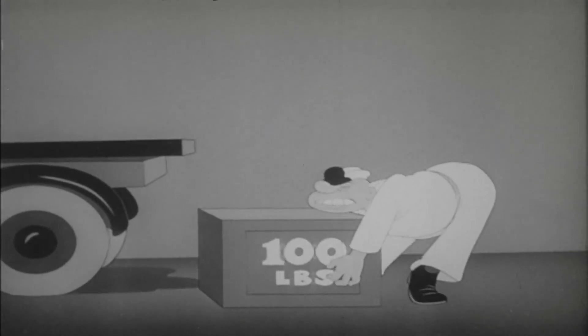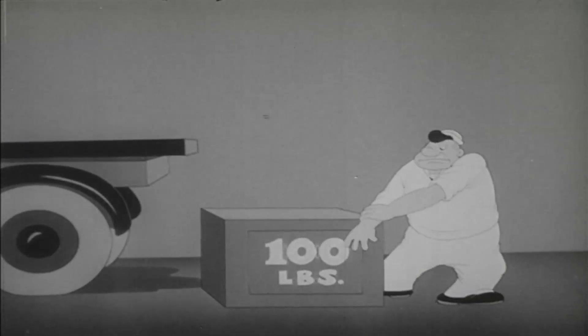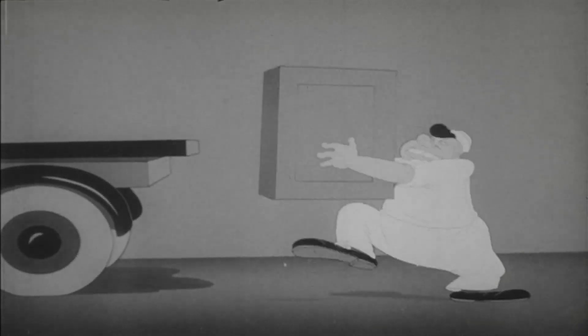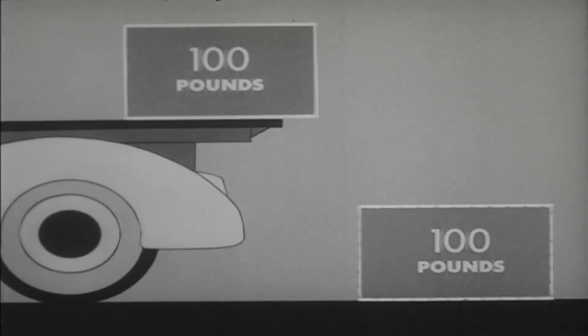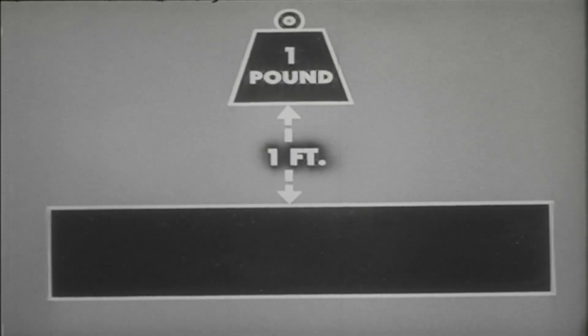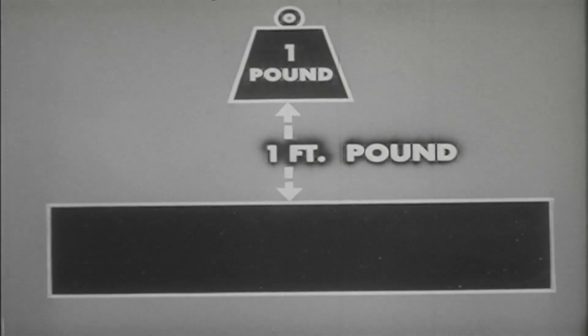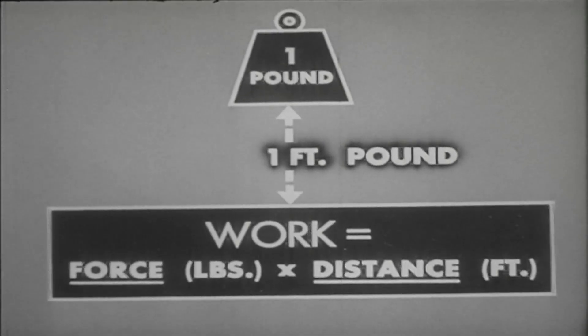Let us consider for a moment what work in the mechanical sense is. We can explain it best by a simple illustration: a man lifting a box. In the scientific sense of the word, no work is done no matter how hard the man tugs or lifts unless the box is moved. When the box begins to move, work is being done. It is the actual work accomplished that we measure, not the effort expended in doing it. When a hundred pound weight is lifted through a vertical distance of three feet, we say that three hundred foot pounds of work has been done. If we lift one pound through a vertical distance of one foot, we do one foot pound of work. Thus, work is the force exerted times the distance through which it moves — expressed as a formula: work equals force times distance.